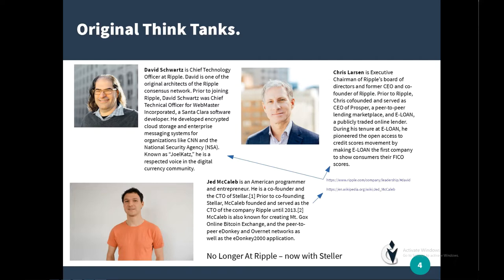Chris Larson is Executive Chairman of the Ripple Board of Directors and former CEO and co-founder of Ripple. Prior to Ripple, Chris co-founded and served as CEO of Prosper, a peer-to-peer lending marketplace, and eLoan, a publicly traded online lender. During his tenure at eLoan, he pioneered the open access credit scores movement by making eLoan the first company to show consumers their FICO score. He has constantly been a leader in the freedom of banking.